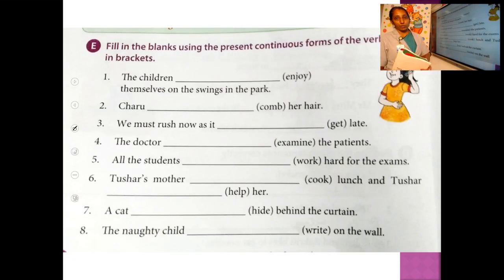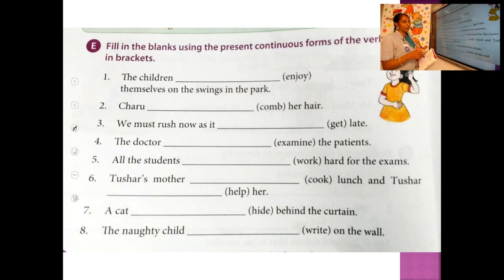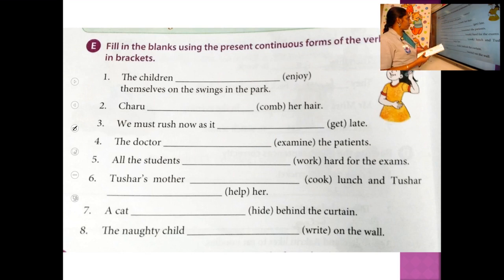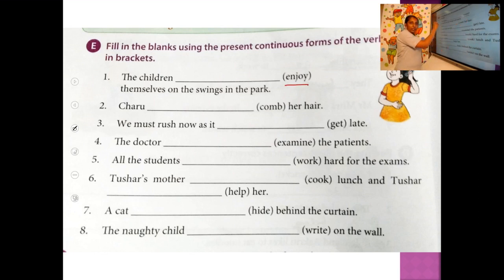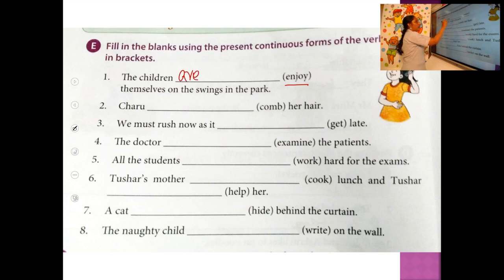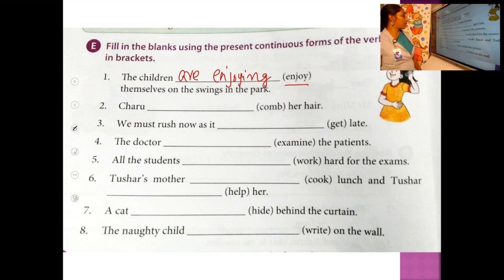Next we are going to do the textual exercises, page number 42, exercise E. Fill in the blanks using the present continuous forms of the verb given in brackets. First sentence: 'The children dash themselves on the swings in the park.' The verb is 'enjoy.' The subject 'the children' is plural, so you select 'are.' The children are enjoying themselves on the swings in the park.